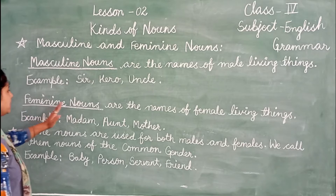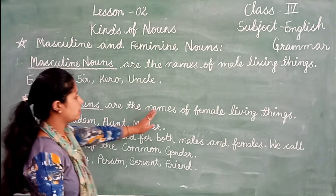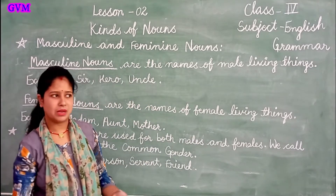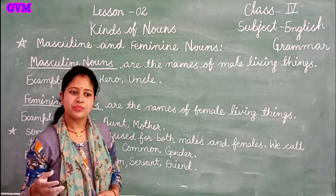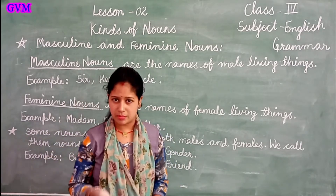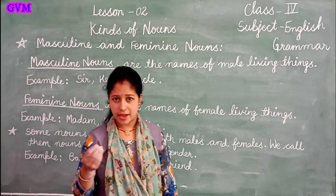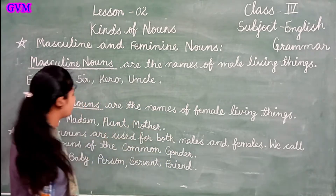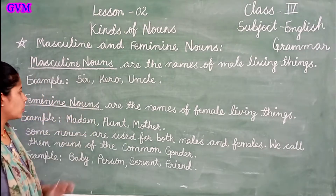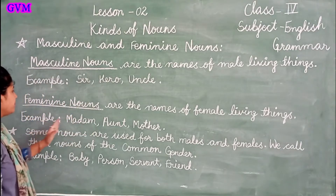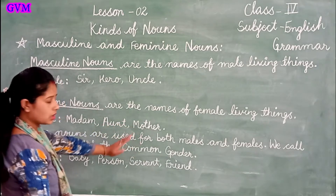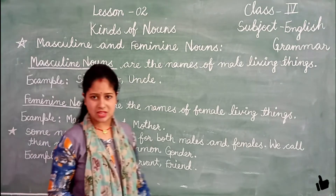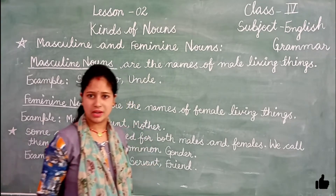Now we will read about feminine nouns. Feminine nouns are the names of female living things — women, ladies, girls. Animals can also be female living things. These are called feminine nouns. For example: madam, aunt, mother. So masculine means male living things and feminine means female living things.